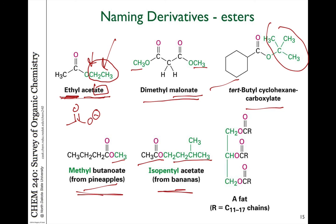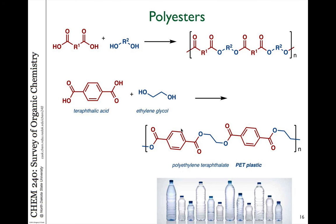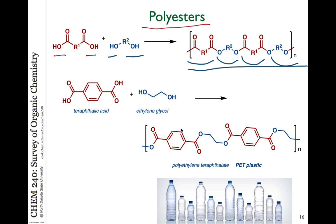These esters are commonly found in fruits and have a wonderful fruity smell. Some naturally occurring esters are fats — a triester made from fatty acids attached to a three-carbon triol molecule. Esters are also very important constituents of polymers: difunctional acids with two acid groups combined with a molecule containing two alcohol groups can form long chains of polyesters. One example is the combination of terephthalic acid (the dicarboxylic acid of benzene) and ethylene glycol (1,2-ethanediol), which links up to form polyethylene terephthalate, or PET plastic — the plastic used to make common water bottles.